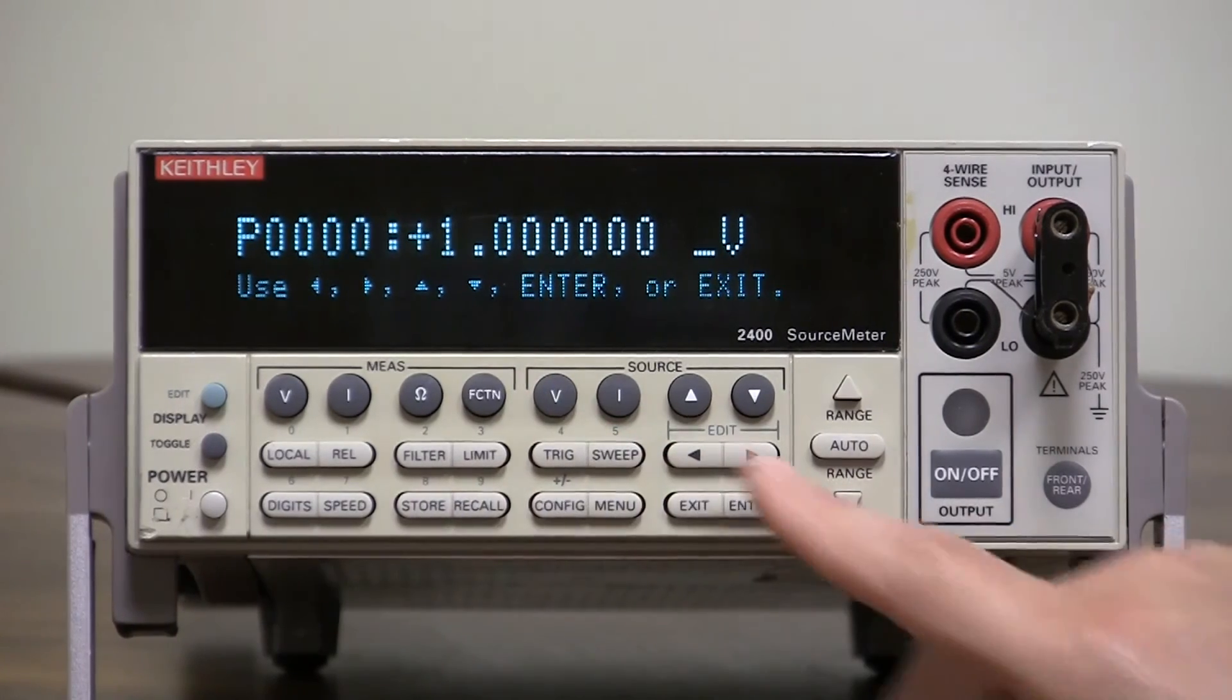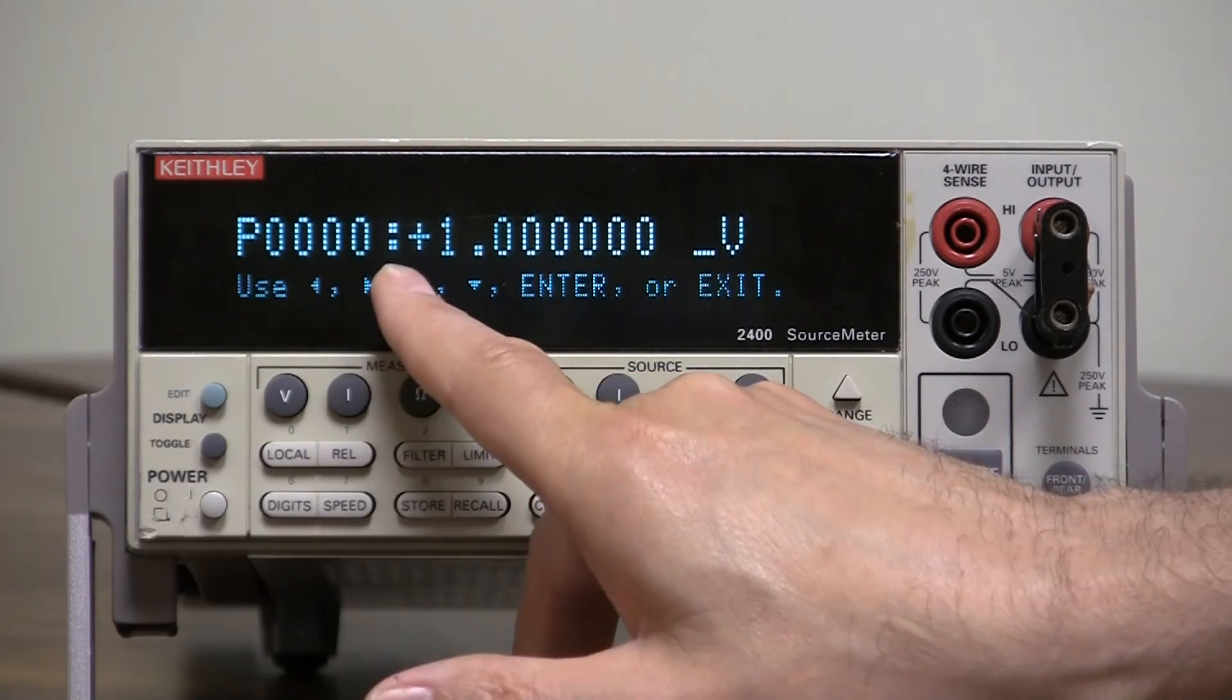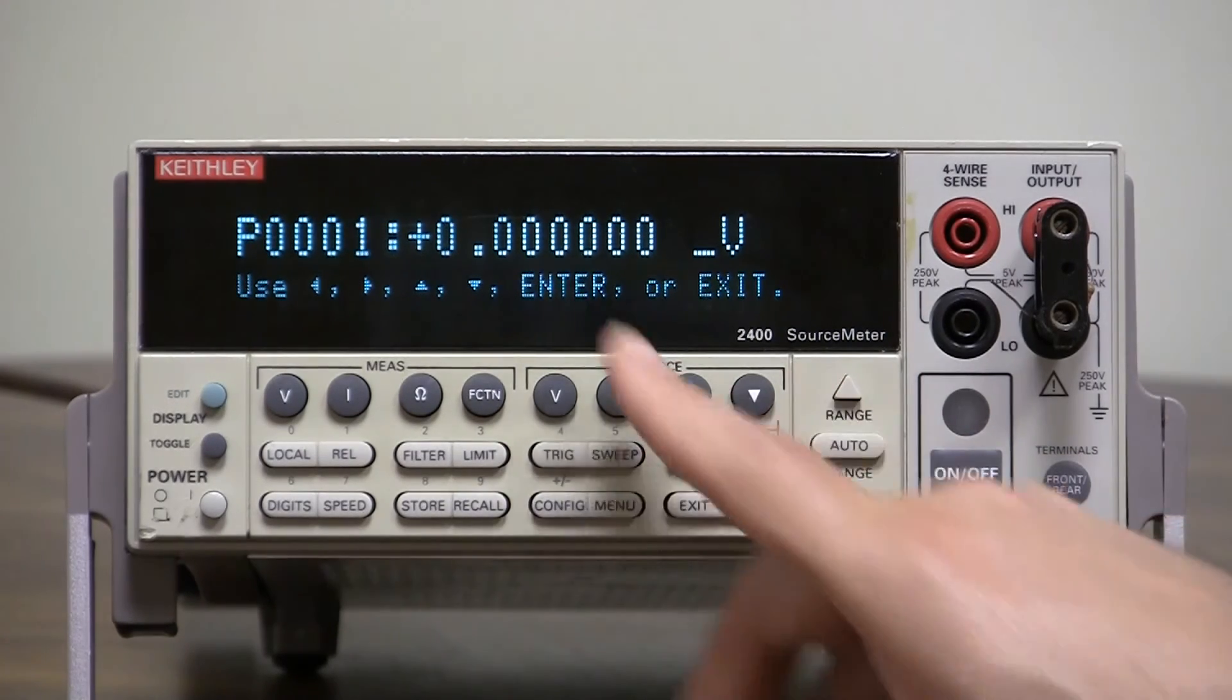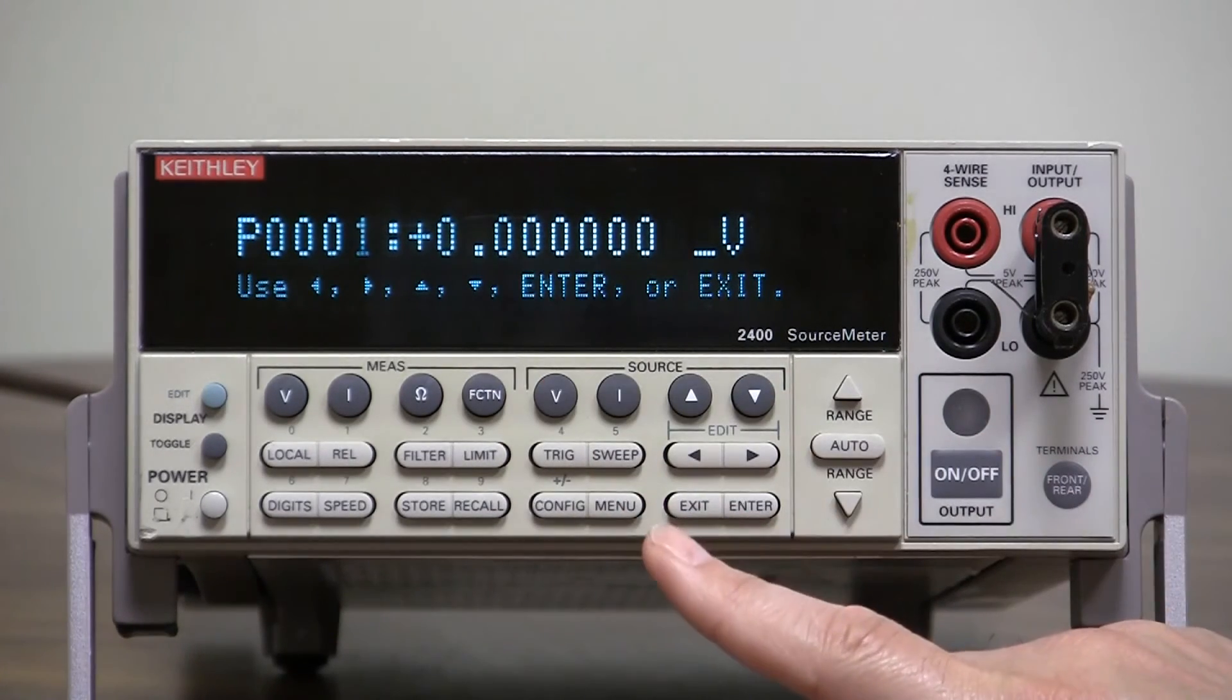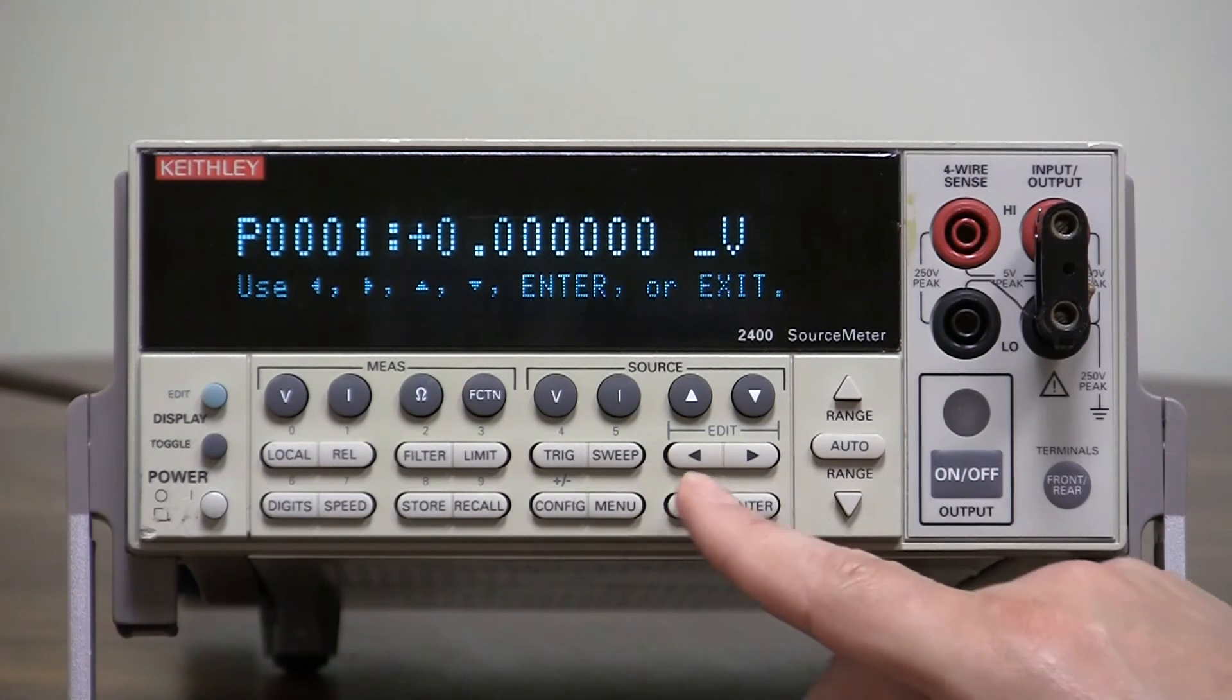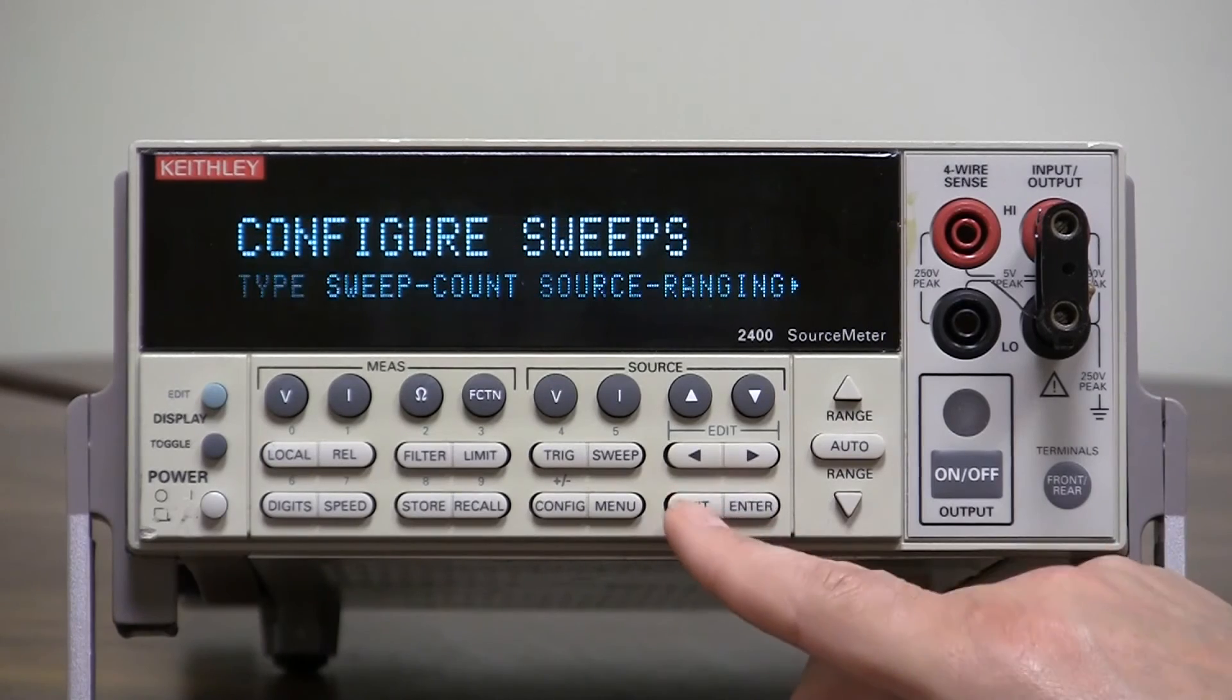So the first point is going to be one volt. The second we're going to go to zero. So we're going to go from one volt to zero volts. We hit enter, exit, exit, exit.